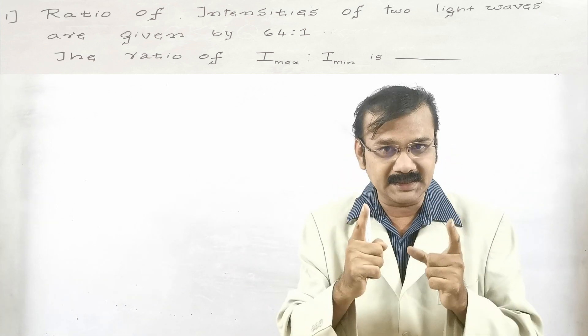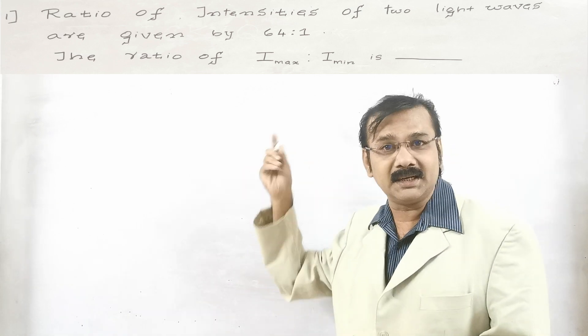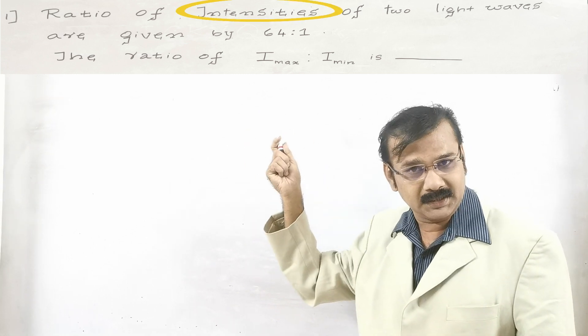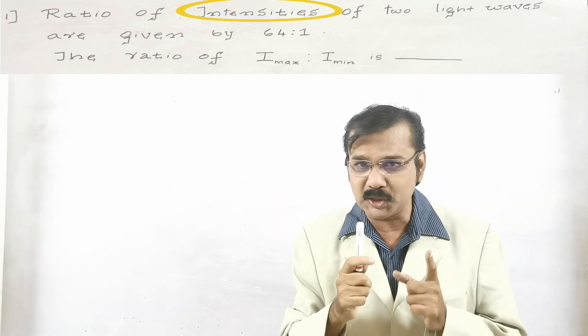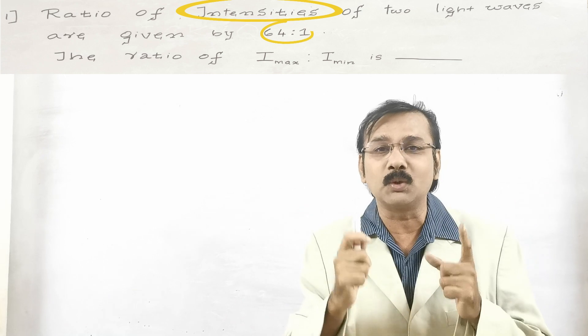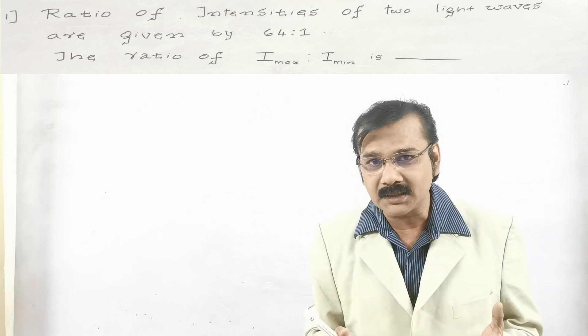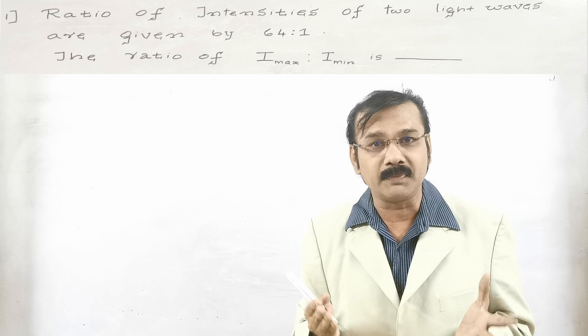The one is intensity which has been encircled there. See there, encircled. And the second one is the ratio, that is 64 is to 1. And what is the answer they asked? They asked Imax by Iminimum.